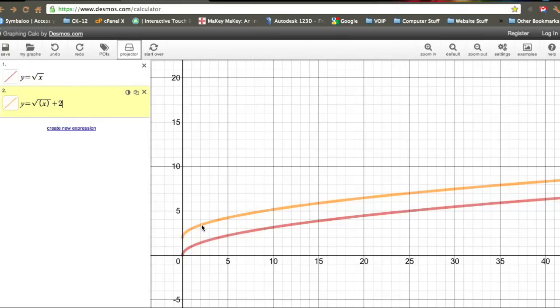And obviously the more we add, the higher the number we add, the more it moves up. If I were to add 6, then I get a vertical jump of 6. If I were to subtract 4, then I get a vertical drop of 4.